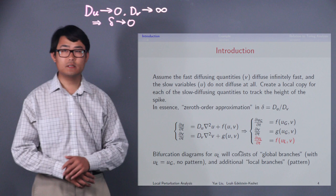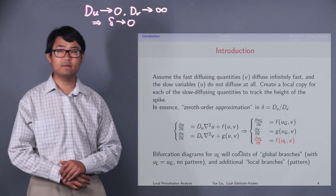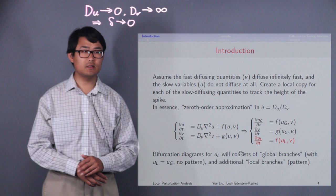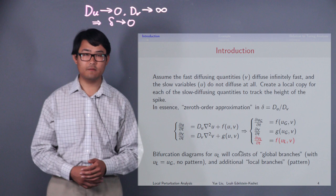Bifurcation diagrams with respect to ul will consist of global branches with ul equal to ug, which corresponds to no patterning, and additional local branches, which corresponds to some sort of patterns.